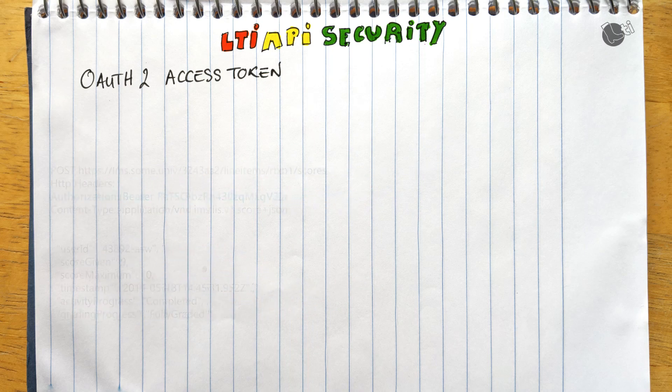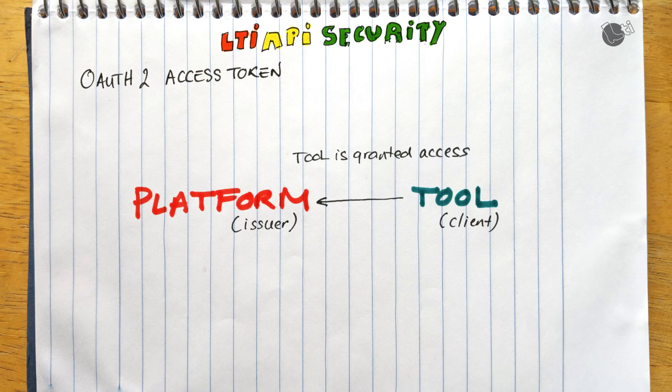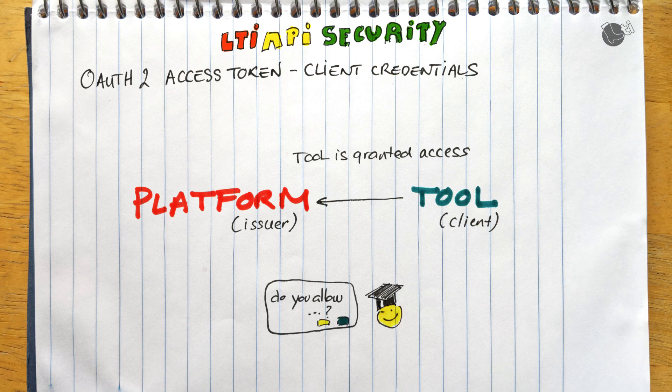Access tokens in LTI are obtained using a client credentials grant. With client credentials, the learning platform grants a tool permission to execute operations — for example, the right to post scores. Individual platform users are not prompted to give permission on a per-activity or per-course basis. Therefore, a single token can be used to send scores across courses; you don't need to request a token on a per-course or per-user basis.